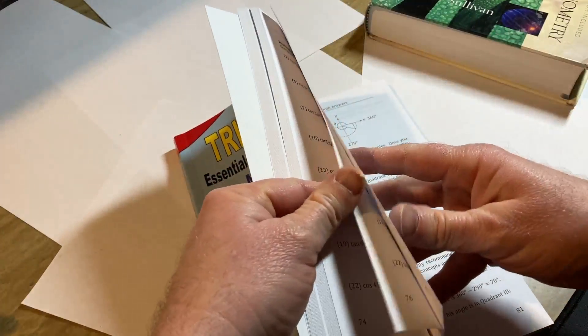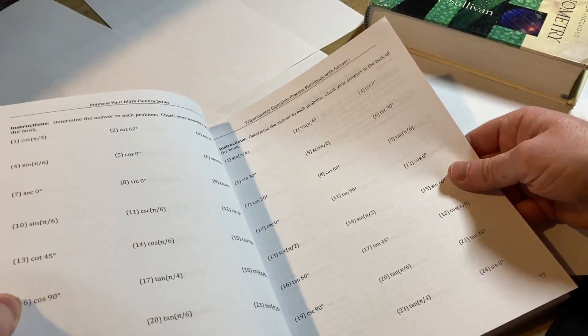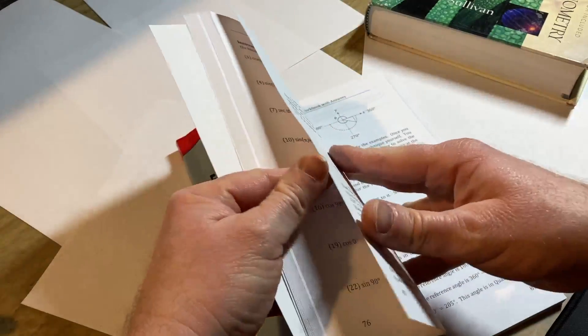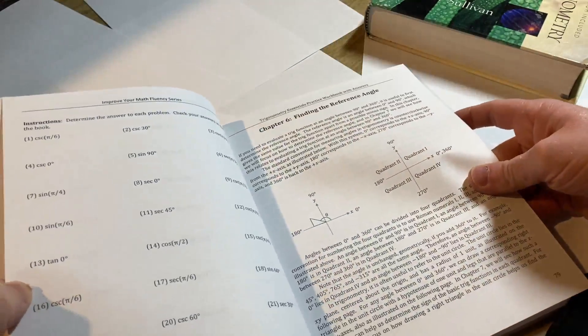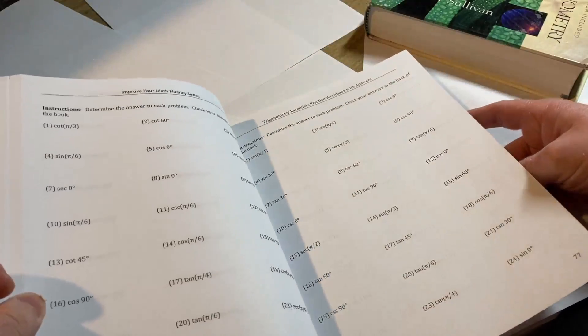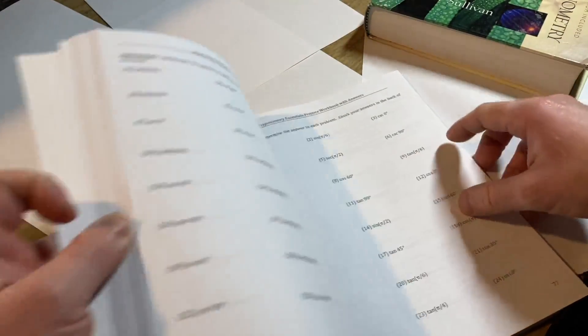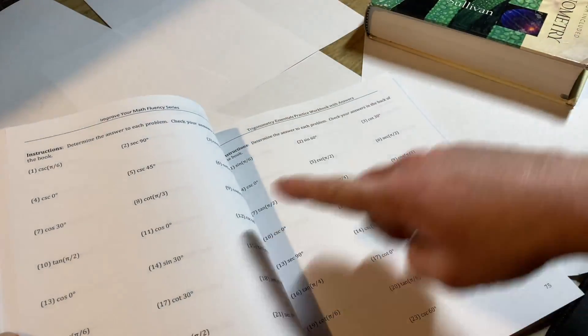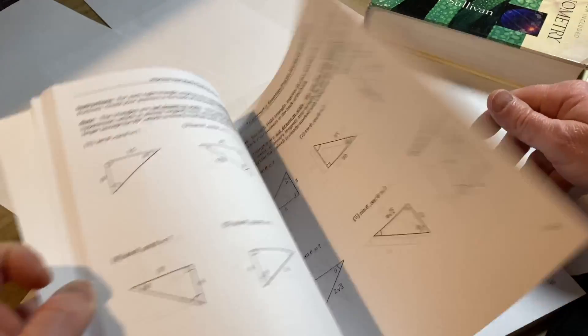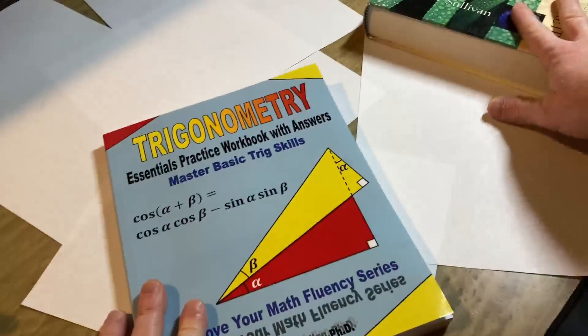1 through 24. Let's turn the page. 1 through 24 again. It's just so many problems. 1 through 24 repeatedly, tons and tons. Anyways, those are some books for learning trig. Hopefully this has helped you.